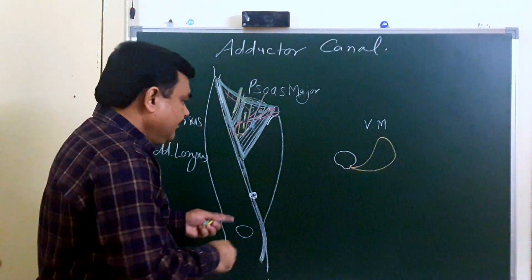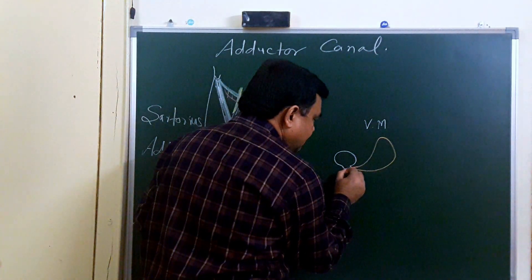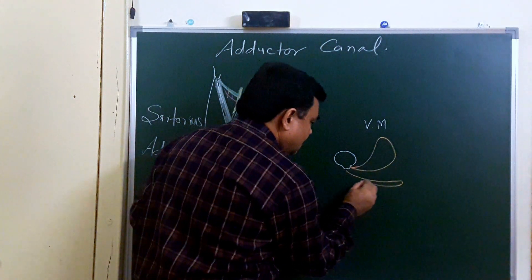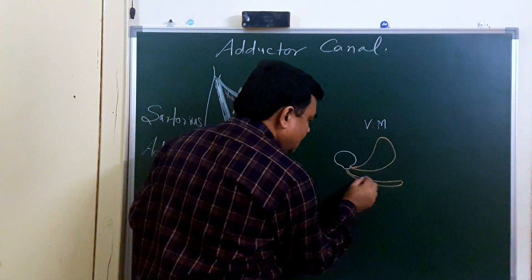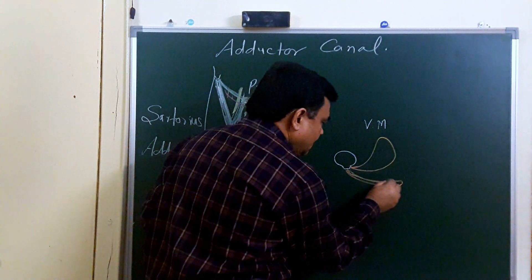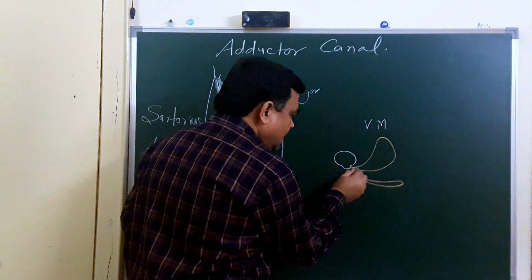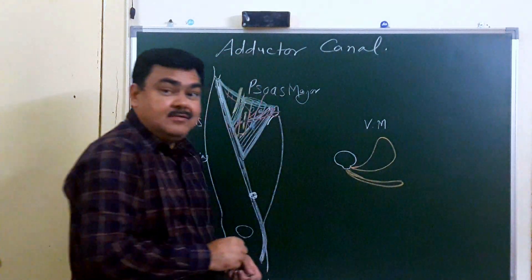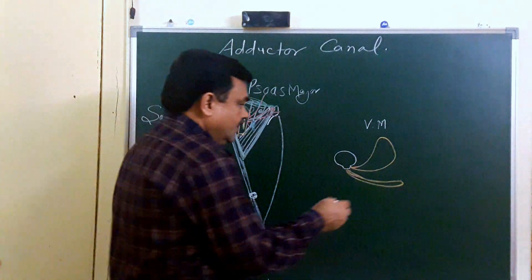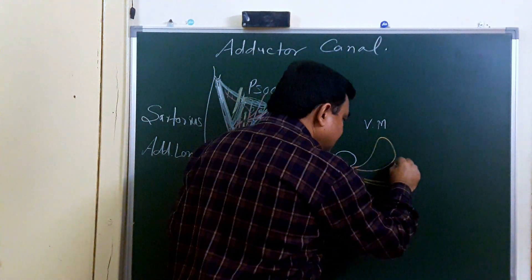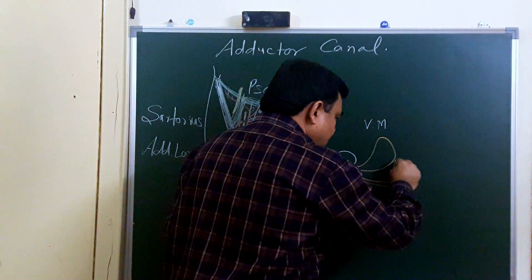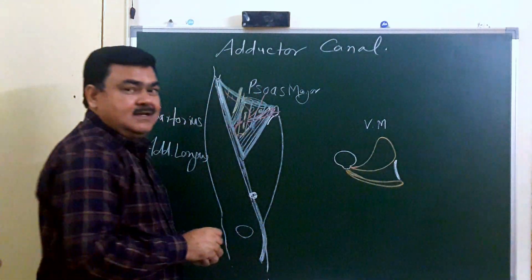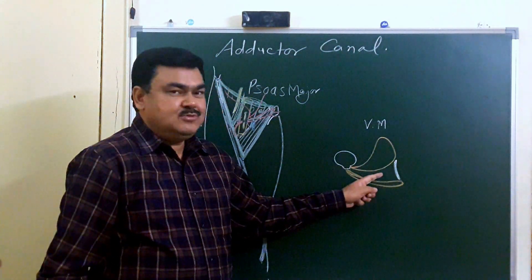And here on the medial side, attached to the femur, are adductor longus and adductor magnus. Here is adductor longus and adductor magnus. Here is a fibrous sheath — fibrous tissue. So this triangular space, this triangular intermuscular space, is known as adductor canal.